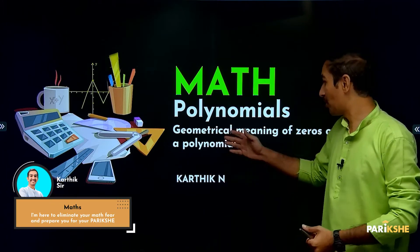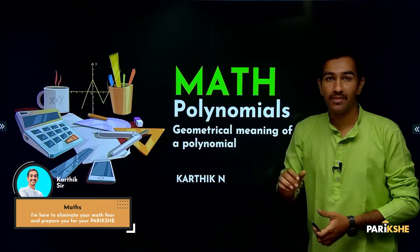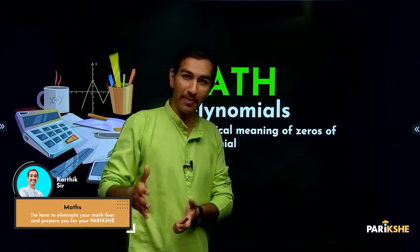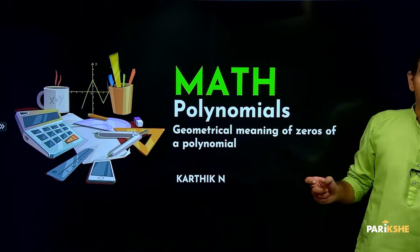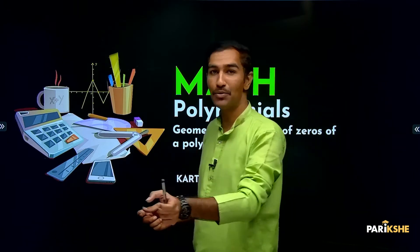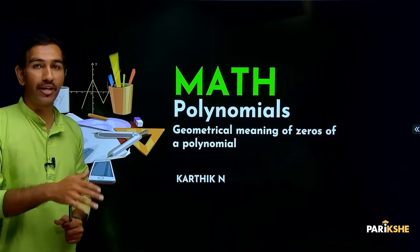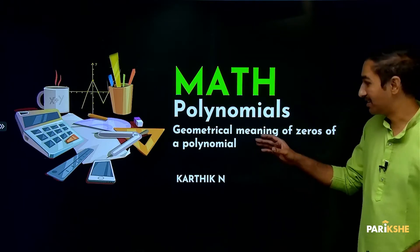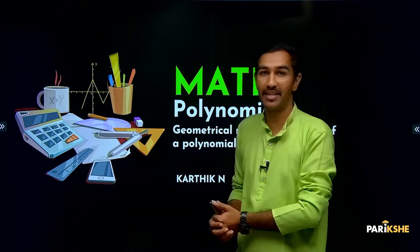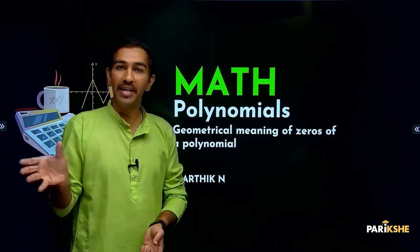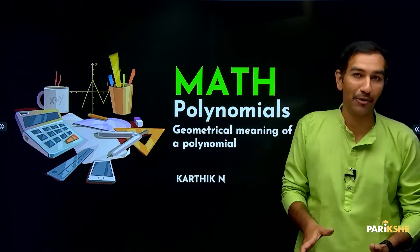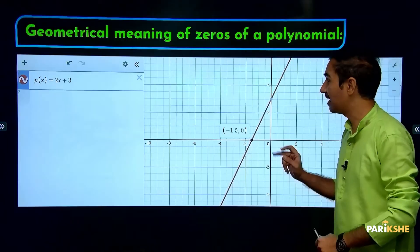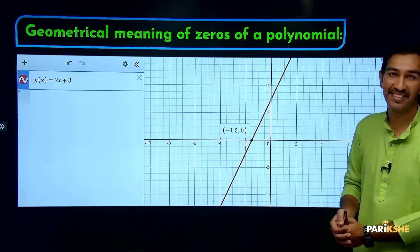The next topic of polynomial is the geometrical meaning of zeros of a polynomial. We need zeros of the polynomial revision. Algebraically, the polynomial p(x) equals zero is called the zeros of the polynomial. This is algebraically. But this is geometrically - we use graphs.